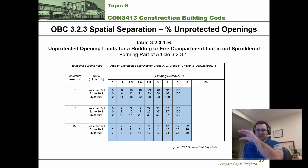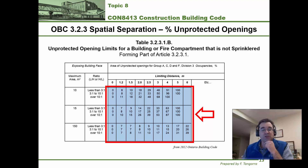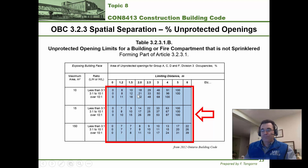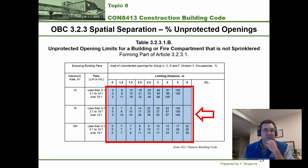To recap: along the top is limiting distance, and on the left-hand side is area and ratio. The rest of the table itself gives the percentage of area that may be unprotected. All numbers inside the table are percentages of that face area that are allowed to be unprotected openings. It ranges from 0 — meaning 0% unprotected, essentially a solid exterior wall — all the way to 100%, meaning the entire exterior wall can be unprotected, like one giant open window.